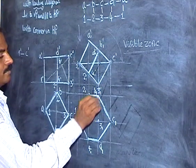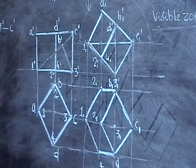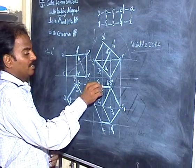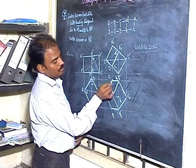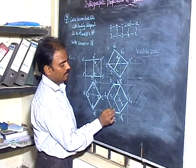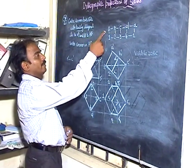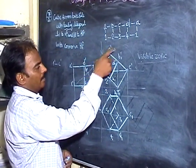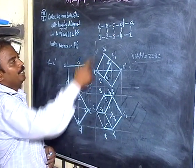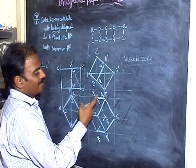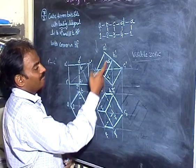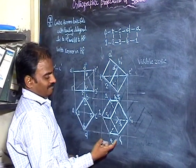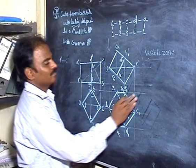Put ABCD as dark lines. Points 1, 2, 3, 4 are fully below the visible zone, so they are totally visible. The edge 1,2 is visible because it is the edge — edges are always visible. Now look at the connections: A1 is visible, make it dark. B2 likewise. C3 is inside and not visible, so make it dotted. D4 is an edge, so leave it dark. This gives the final outline.